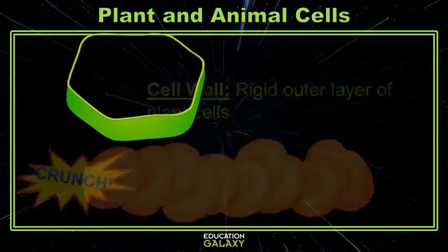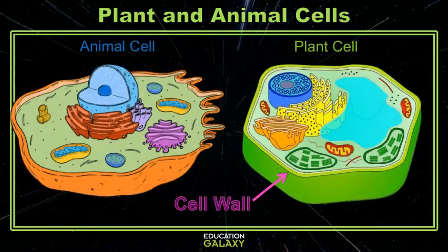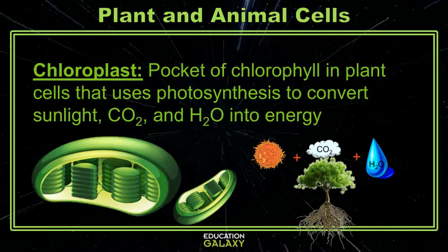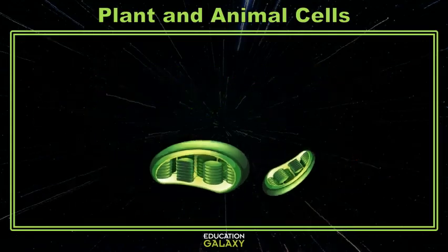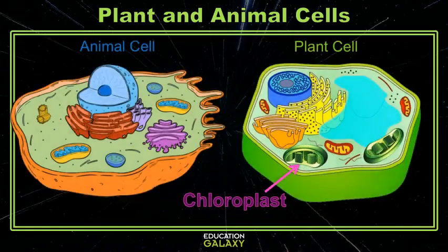Animal cells don't have a cell wall, so when you eat a grilled chicken strip, it doesn't crunch. The biggest and most defining difference between plant and animal cells is that plant cells have chloroplasts. Chloroplasts are small packages inside of plant cells that use the process of photosynthesis — how plants convert light, CO2, and water into energy and food for the plant. Chloroplasts are also the reason that most plants are green.